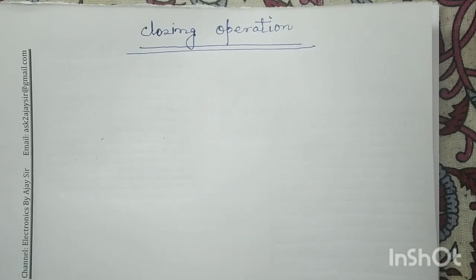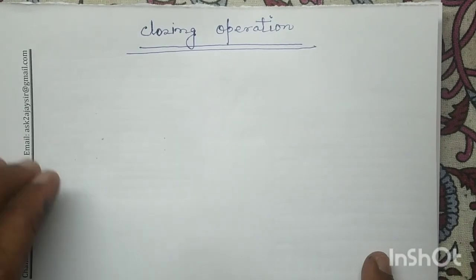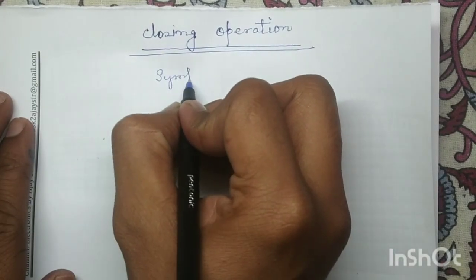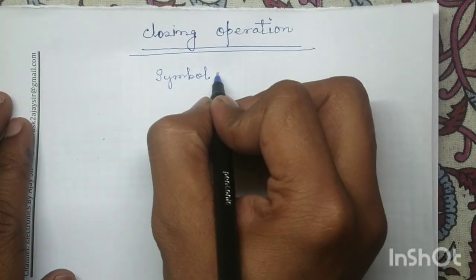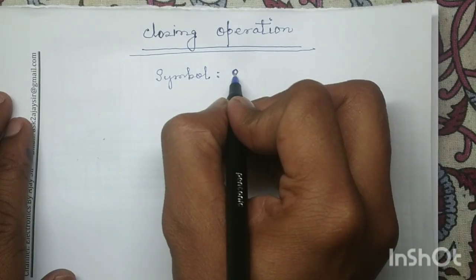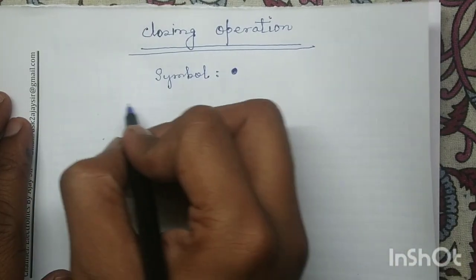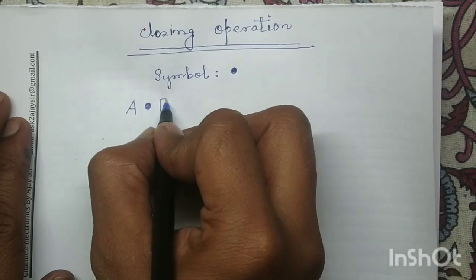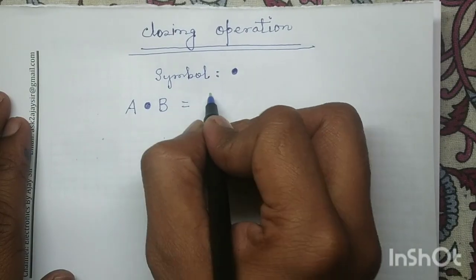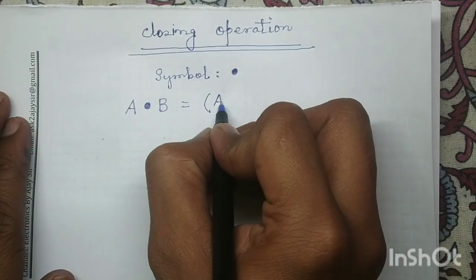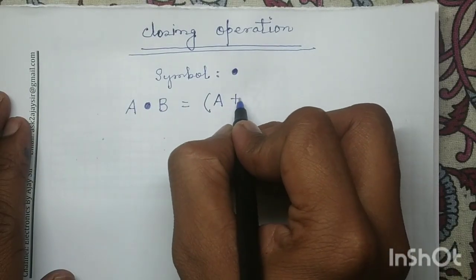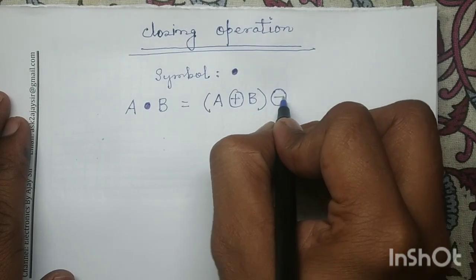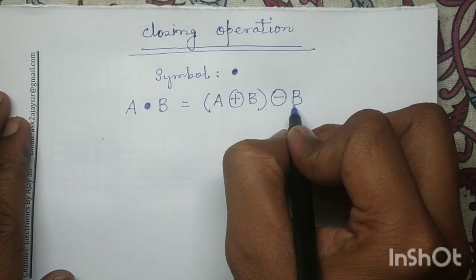Good morning all. Today we will learn the closing operation and its symbol. The symbol of closing operation is like a filled circle, and the mathematical expression of closing operation A closing B is given as A dilation B followed by erosion with the same structuring element B.